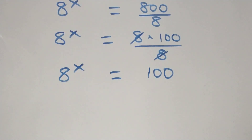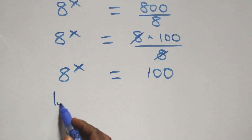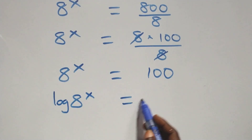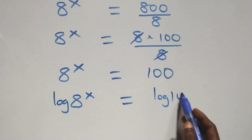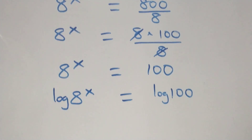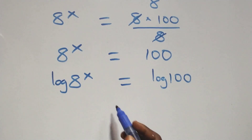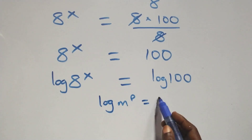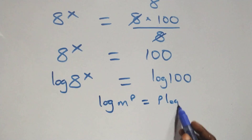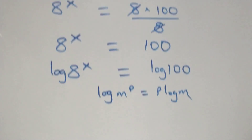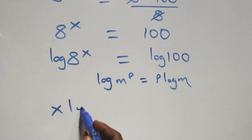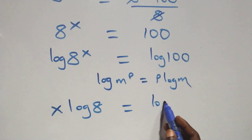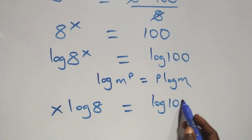Then we take the log on both sides. We have log of 8 raised to power x equals log of 100. We apply the power log rule: log m raised to power p is the same as p log m. So this becomes x log 8 equals log 100.